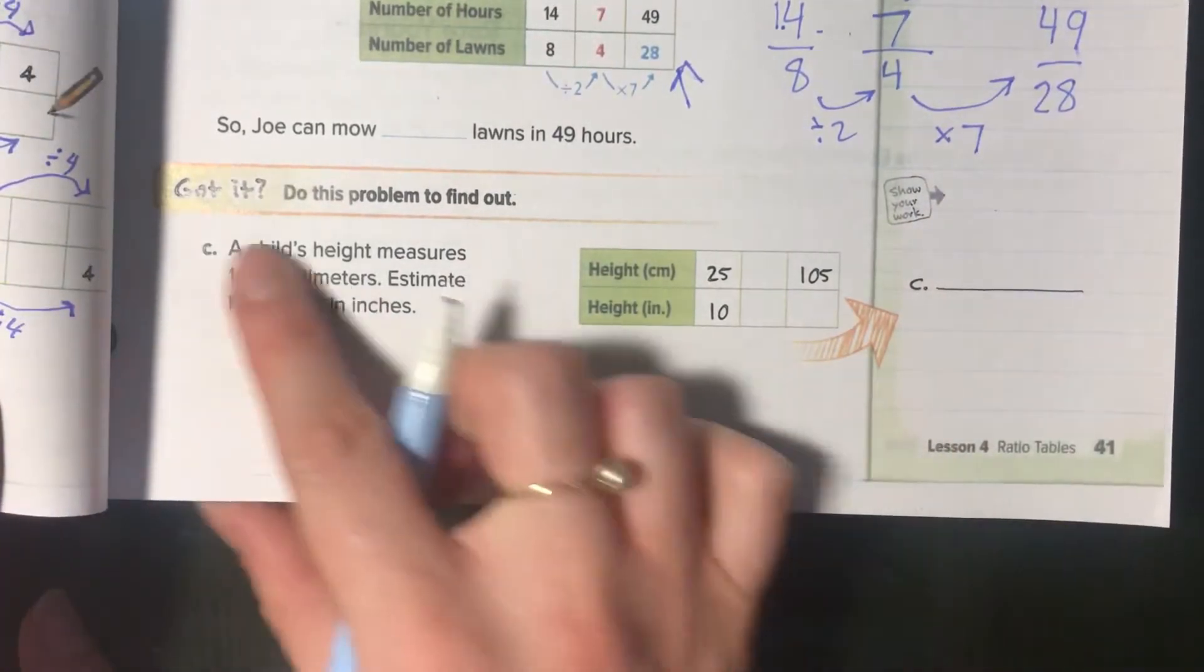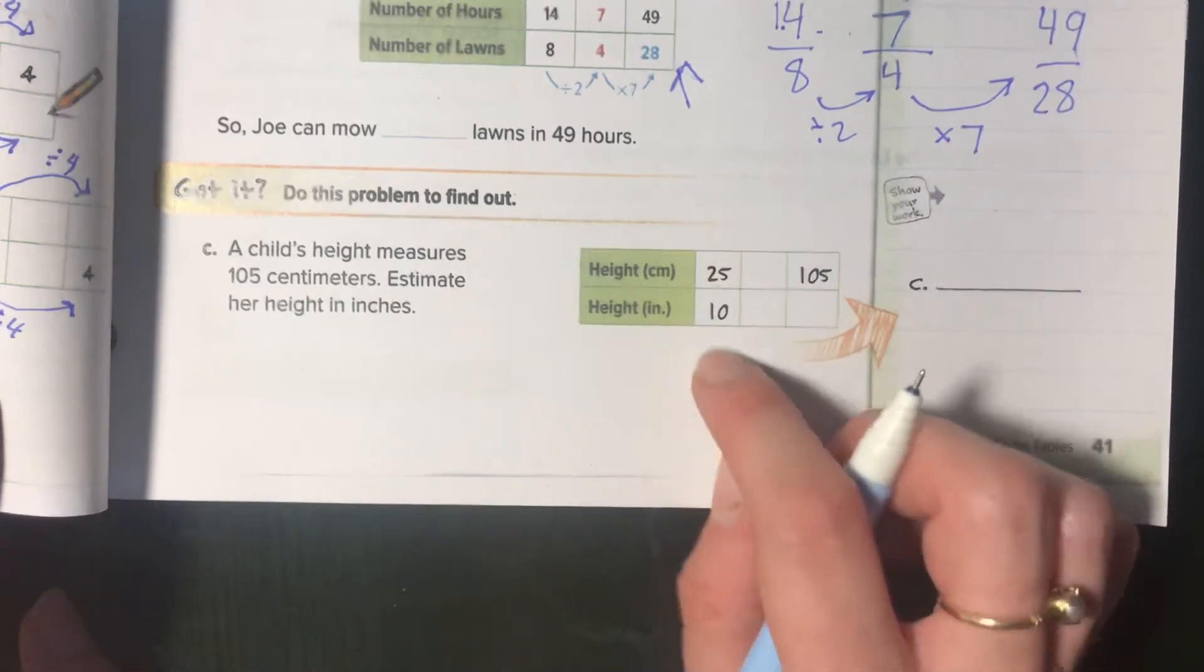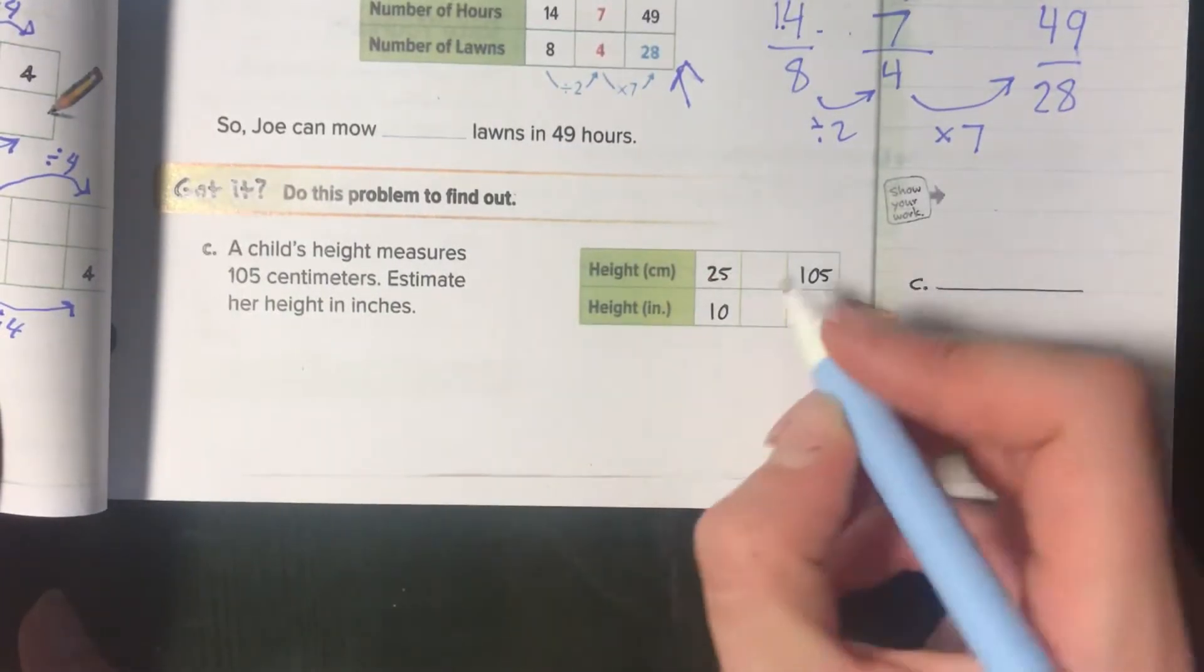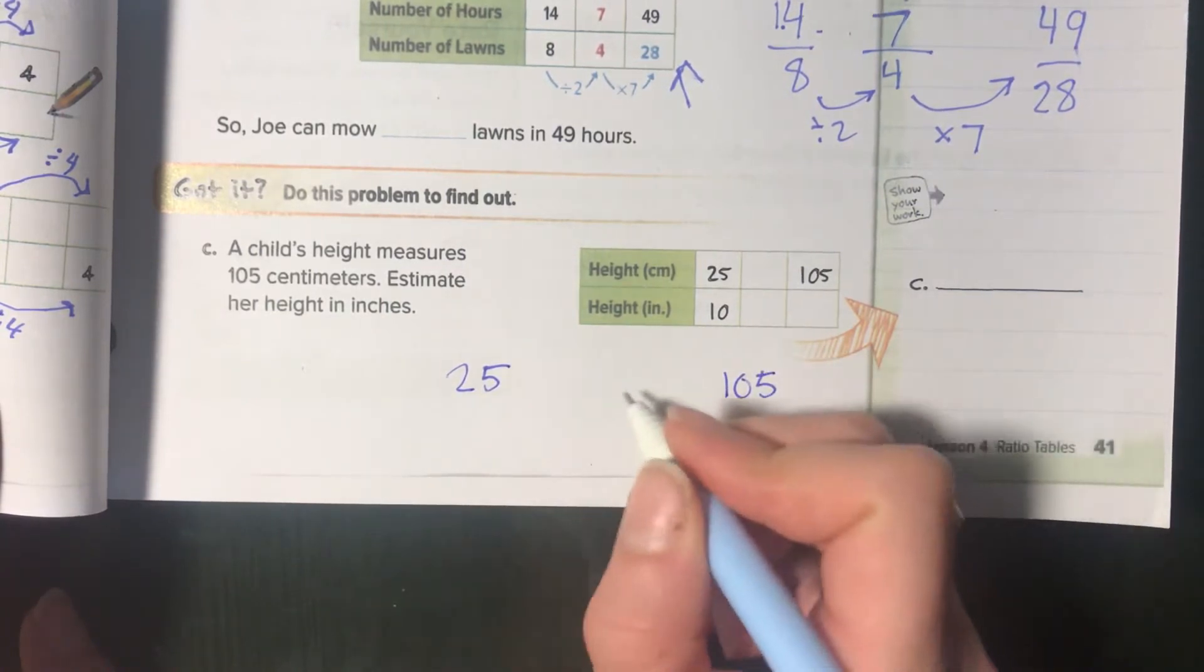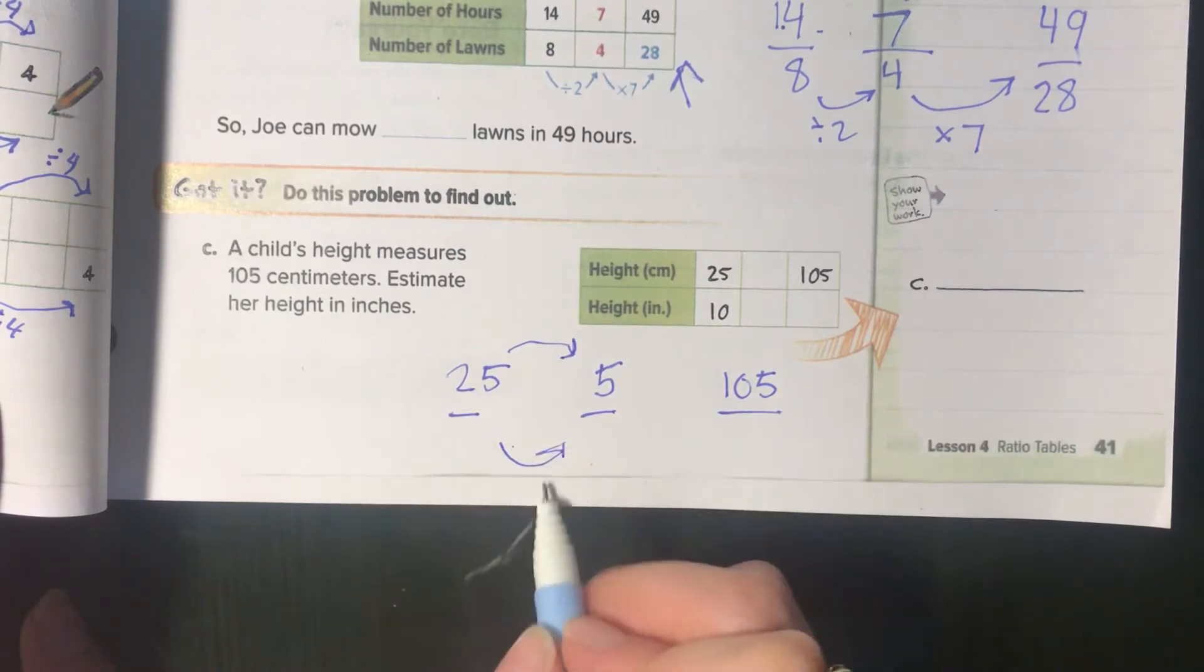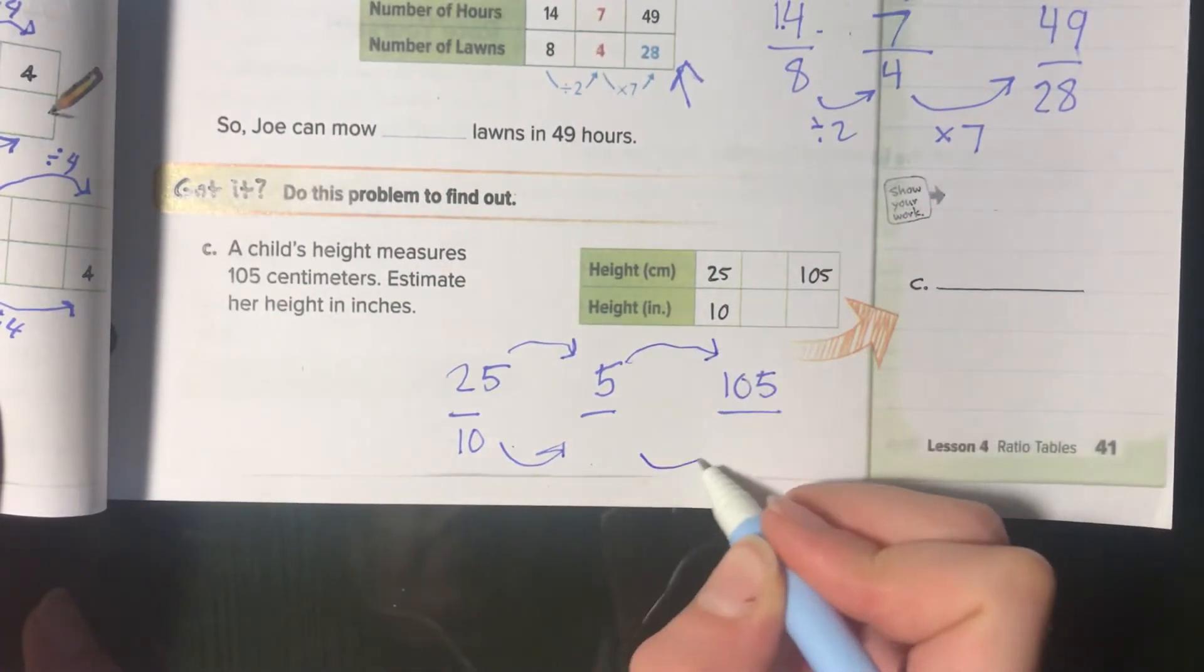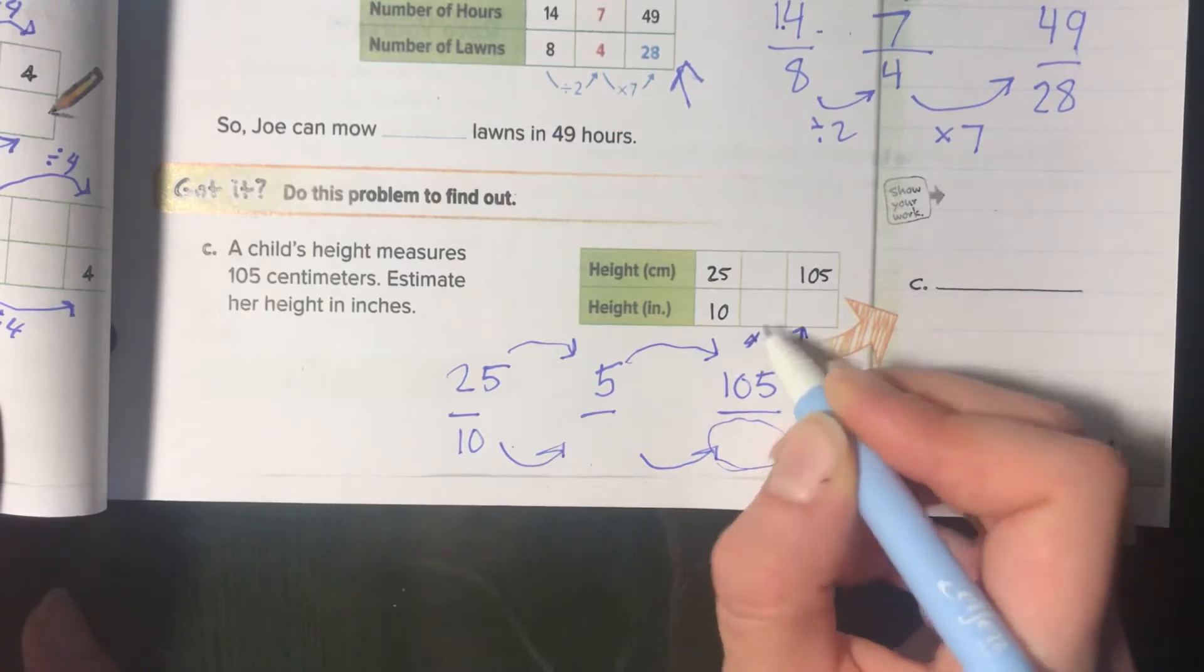One more. Got it. A child's height measures a hundred and five centimeters. Estimate her height in inches. They gave us the equivalent. They said twenty-five centimeters is the same as ten inches. Twenty-five and one-oh-five don't really work together, right? But what about five? They can both go with five, right? So, you need to scale down to five. You have to decide what to do here. Divide by something, and then use this to scale back up to one hundred and five. To find this answer, to find what will go in these boxes. So bring your answers to class.